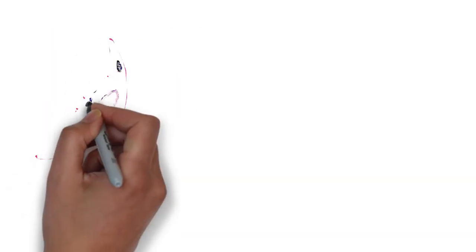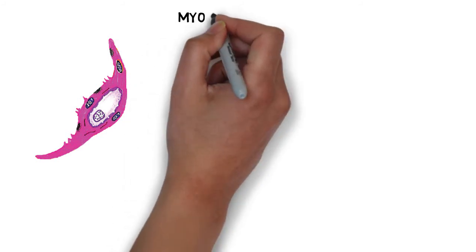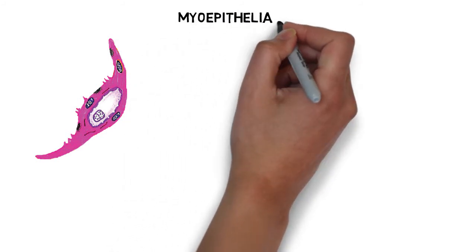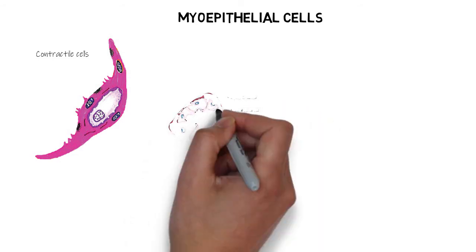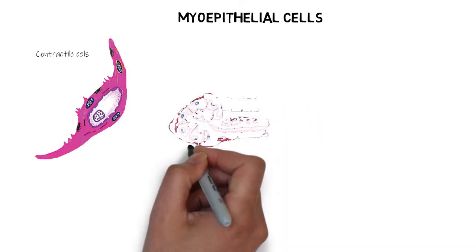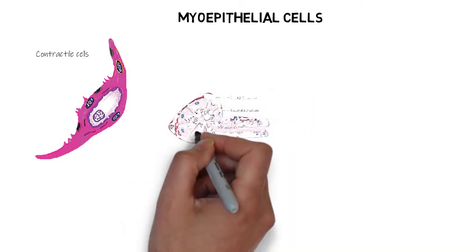One particular cell that plays an important role in the secretion of saliva is the myoepithelial cell. Myoepithelial cells are contractile cells, therefore capable of producing self-contraction. They are associated with secretory end pieces and also with the intercalated ducts.